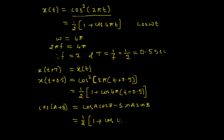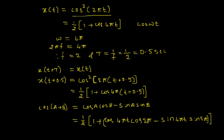Expanding: cos(4π·0.5) = cos(2π) and sin(4π·0.5) = sin(2π). We know that cos(2π) = 1 and sin(2π) = 0. Using these results, the expression reduces to ½(1 + cos(4πt)).